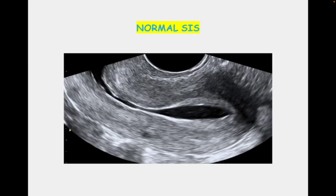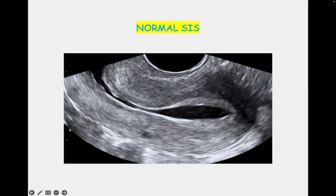Now looking at some pictures of SIS — this is a normal SIS in the sagittal section of the uterine cavity. This is the endometrium, and the black area is the fluid. Another reason to do SIS during the postmenstrual period is that the endometrium will be thin. If done in the premenstrual period, the thick endometrium might mimic polypoidal endometrium, which it actually is not.